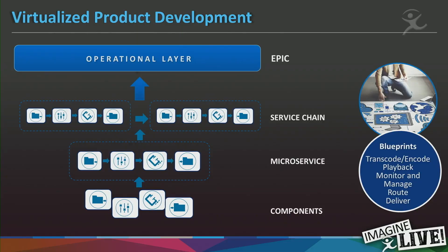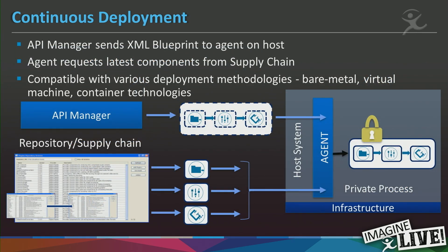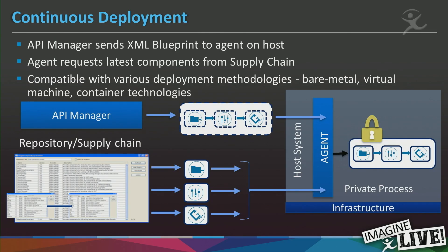This is very similar to a standard microservices approach — you have separate components that you build together, chain those microservices in something called a service train, and have an orchestration layer on top to coordinate the underlying microservices. Behind all of this is a continuous deployment mechanism: a framework within the Xenium architecture that lets you update components and dynamically deploy them across your operational infrastructure without big builds and reinstalls. These updates can happen continuously, on a day-by-day and module-by-module basis, leveraging our repository or supply chain mechanism.